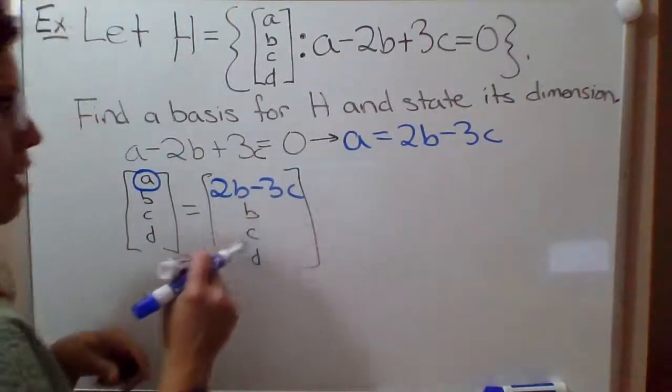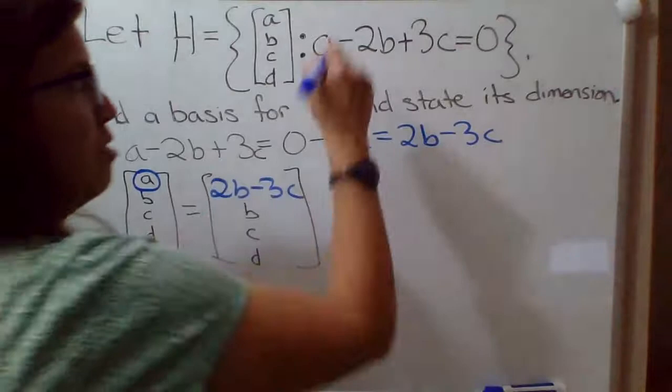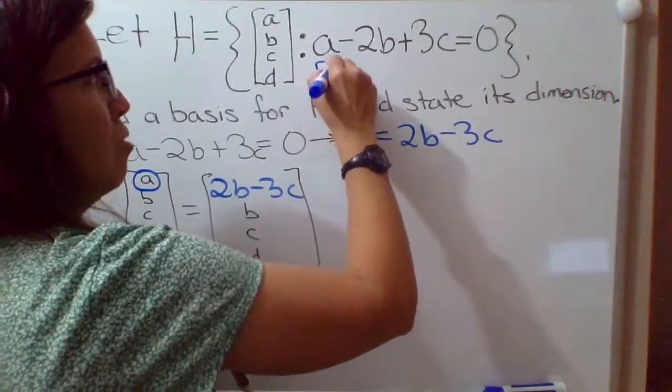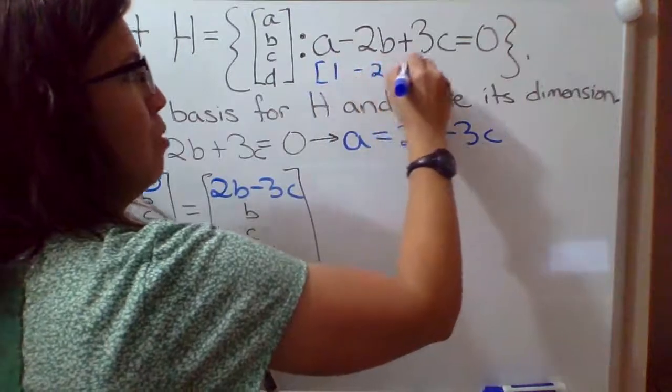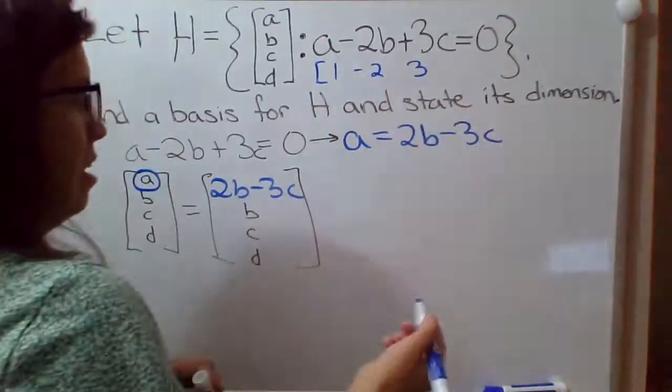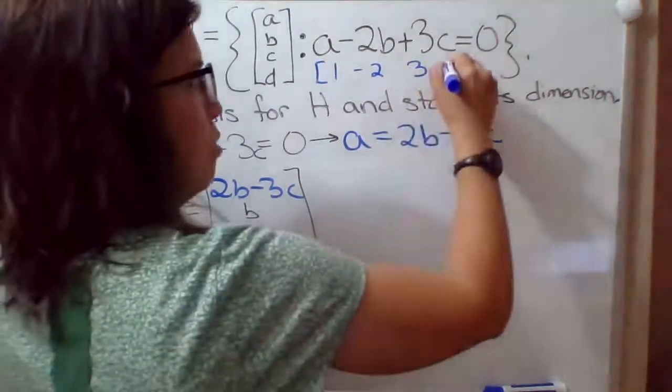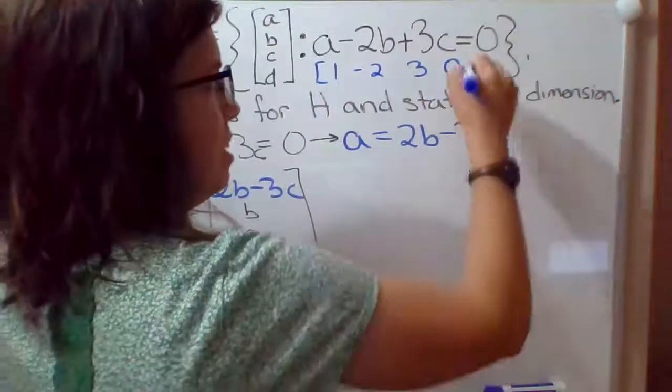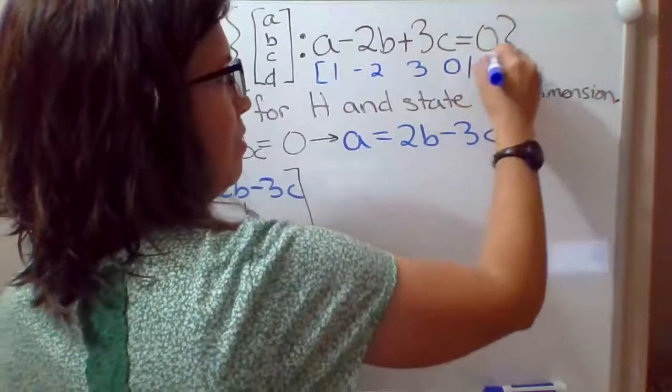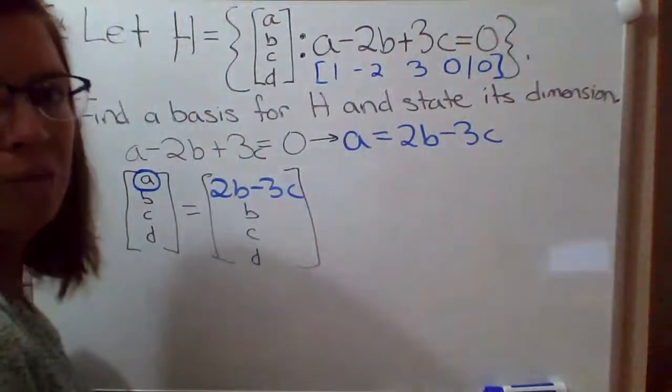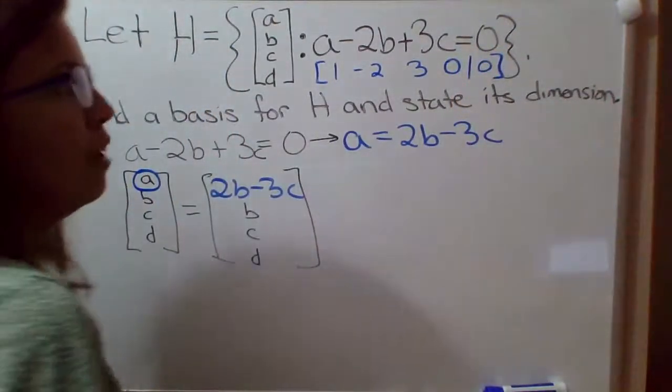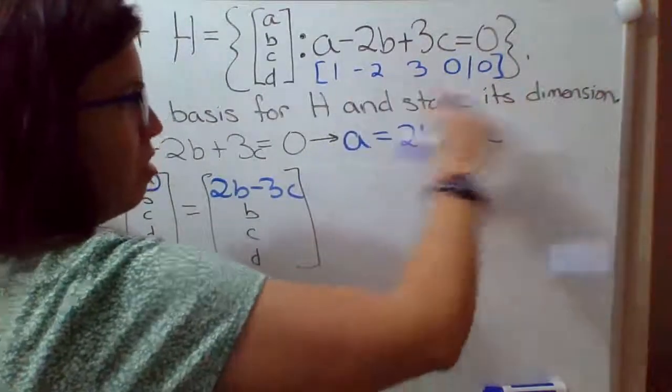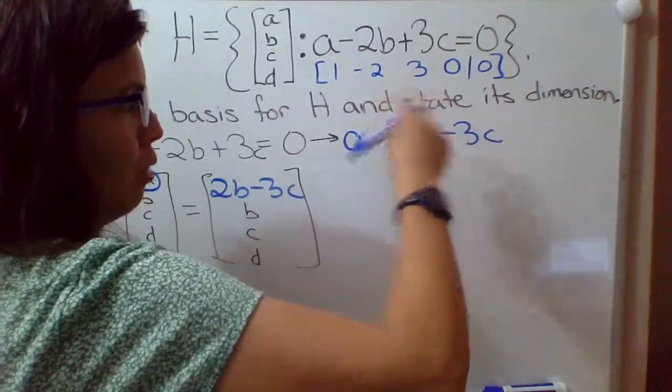So the corresponding matrix for that system would be, I'm going to squeeze it in here if you guys don't mind, the corresponding matrix for that system would be 1, negative 2, 3, there's no D in this equation so I'll put 0 in the D column, equals 0. I could write it that way as an augmented matrix, it's just a single equation, but if it's just one row then this is already in row echelon form.